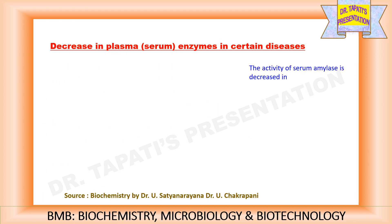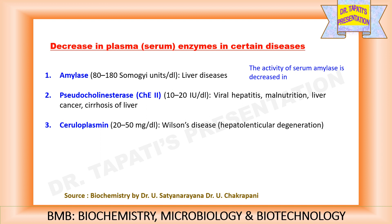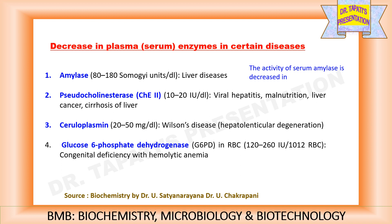However, sometimes the plasma activities of the enzymes may be lower than normal, which could be due to decreased enzyme synthesis or congenital deficiency. The activity of serum amylase is decreased in case of liver diseases. Pseudocholinesterase activity is decreased during viral hepatitis, malnutrition, liver cancer, cirrhosis of liver. Ceruloplasmin level is decreased in Wilson's disease. Glucose-6-phosphate dehydrogenase in RBC is decreased in congenital deficiency with hemolytic anemia.